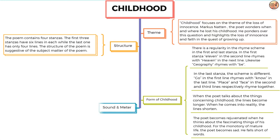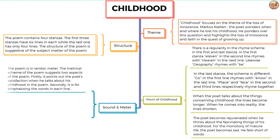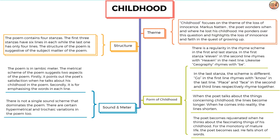Next, we have sound and meter. Childhood is written in iambic meter. The metrical scheme of the poem suggests two aspects: firstly, it points out the poet's satisfaction when he talks about his childhood, and secondly, it is for emphasizing the words in each line. There is not a single sound scheme that dominates the poem; there are certain hypermetrical and trochaic variations.